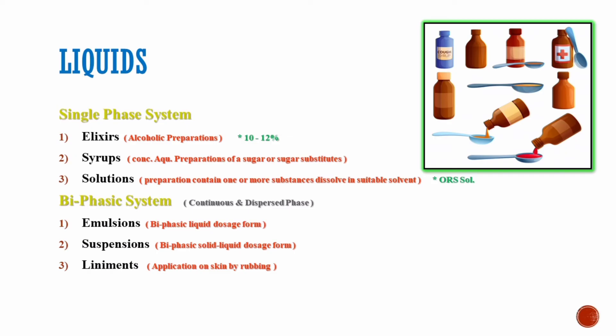The biphasic system basically consists of two phases: the continuous phase and the dispersed phase. Emulsions are biphasic liquid dosage forms in which both phases — the continuous and dispersed — are liquid. Suspensions are biphasic dosage forms in which the dispersed phase is solid and the continuous phase is liquid. Liniments are applied on the skin by the action of rubbing.